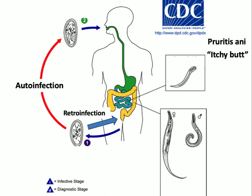The infective stage and the diagnostic stage are both the eggs — the diagnostic egg may not be fully developed, but the infective one must have a fully developed larva inside. Humans are the only host. The females lay about 15,000 eggs, which is pretty terrible.